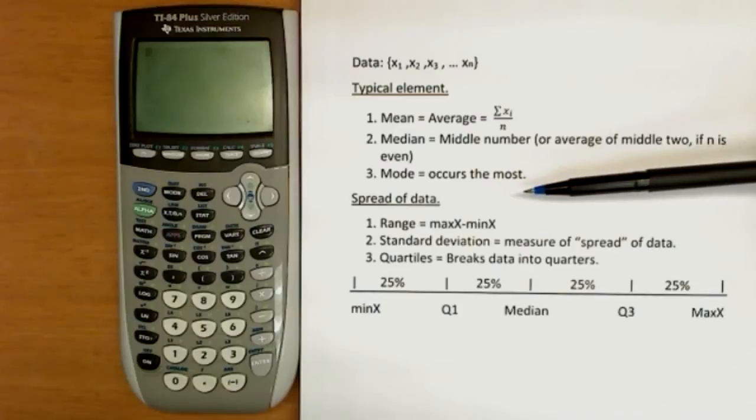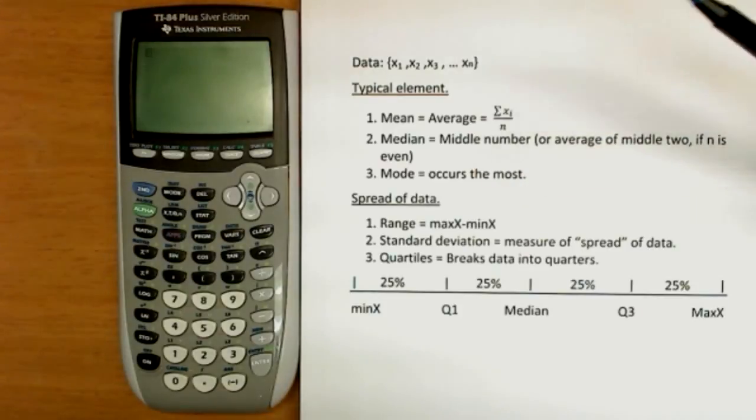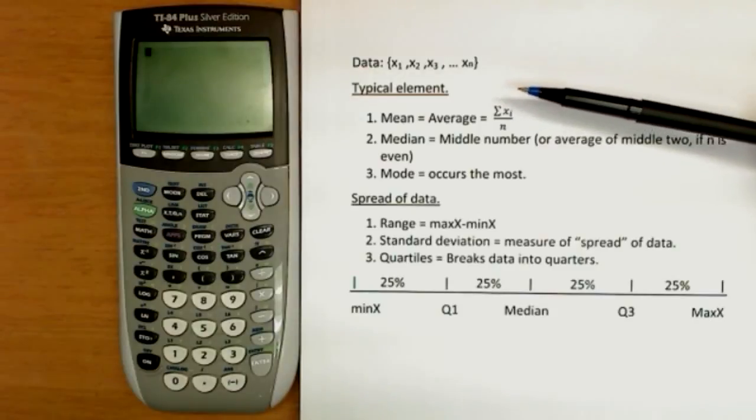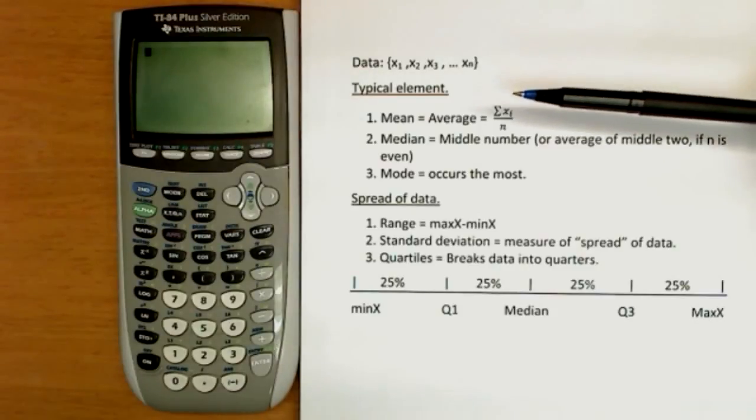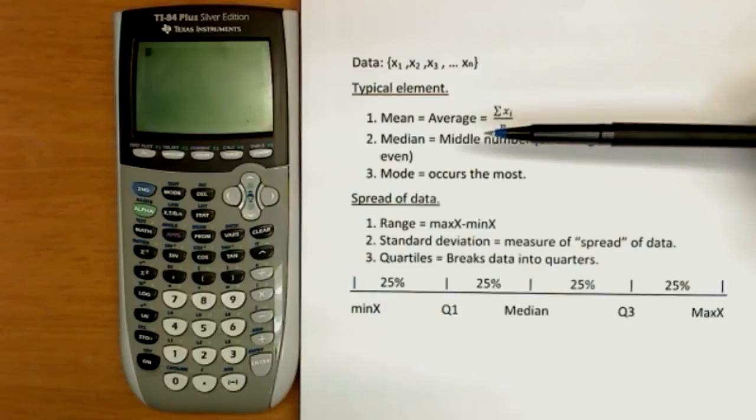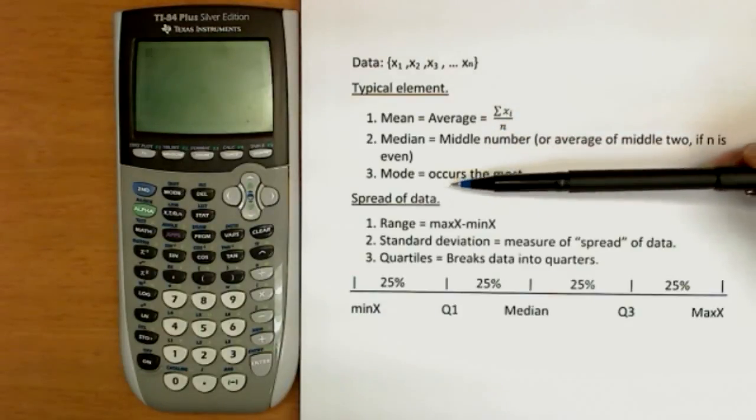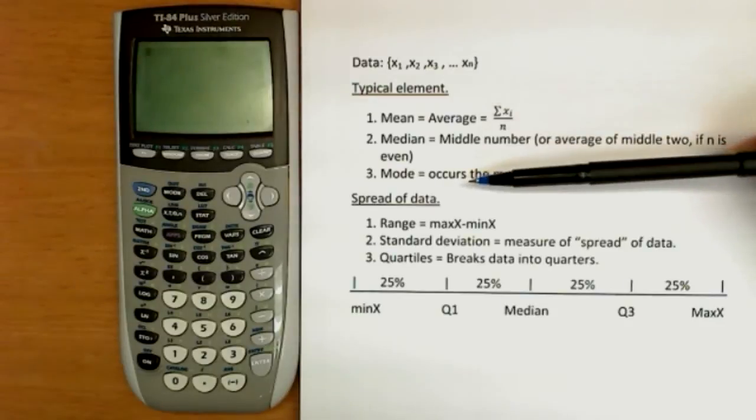Mode is the number that occurs the most. Sometimes data will repeat. For example, if you gave a quiz of five possible points to 100 people, obviously all 100 of them have the same answers from zero to five. So they're repeating a lot. And if number three occurred 60 times, that would be the mode. And that would obviously be another indication of what a typical score is.